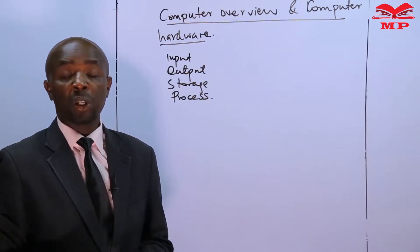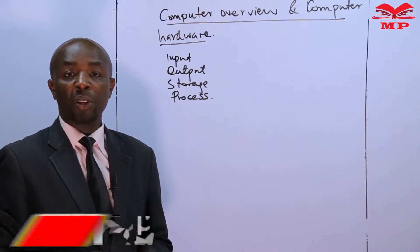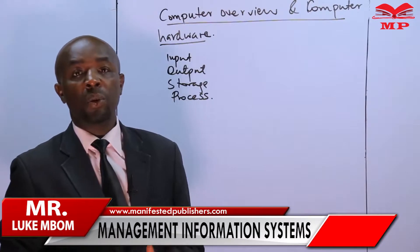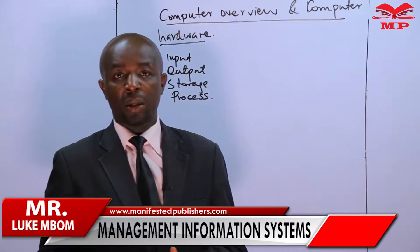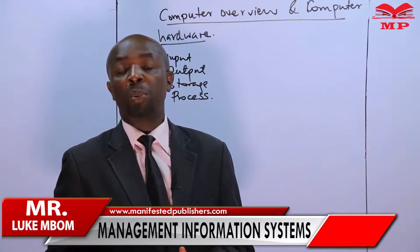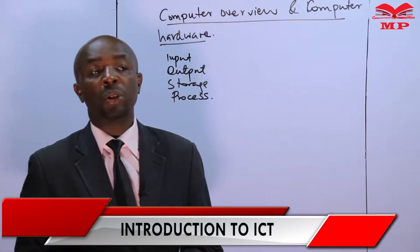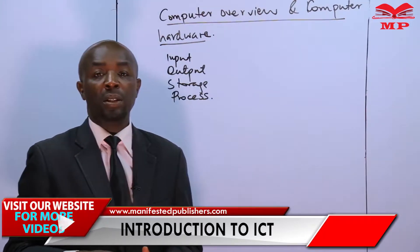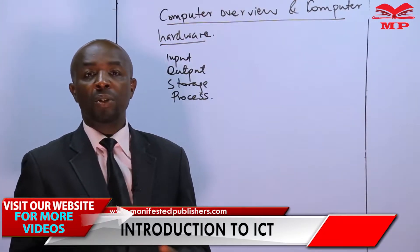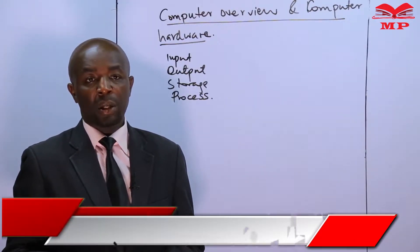That takes us to two terms which have been mentioned: data and information. What is data? Data refers to the raw facts — what has not been processed is called data. What has been processed is called information. Information refers to the processed facts that are required to support the decision-making process in an organization.